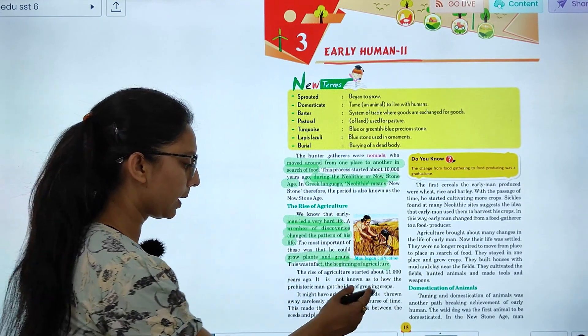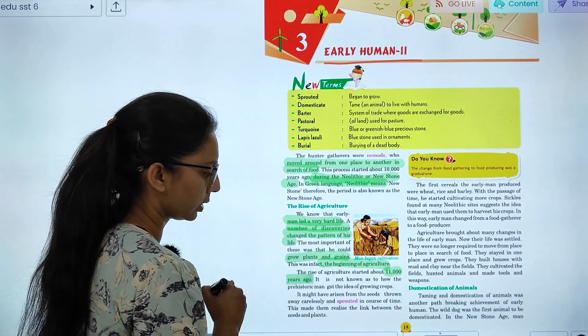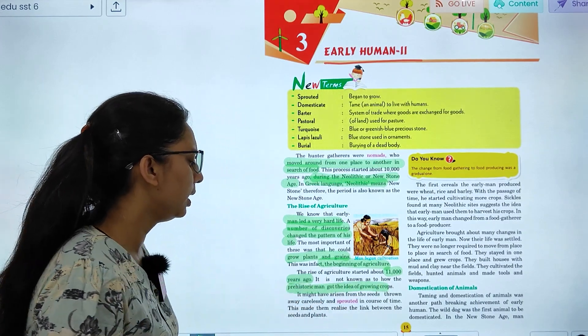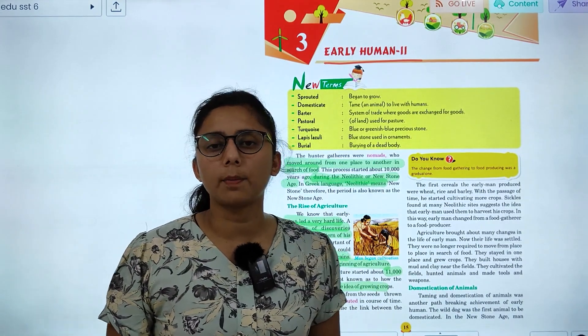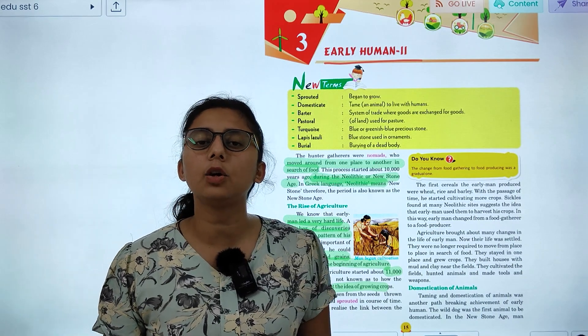And the rise of agriculture, when was there? 11,000 years ago. We say that prehistoric man now got the idea of growing crops. Now he got the idea of how we can grow crops.